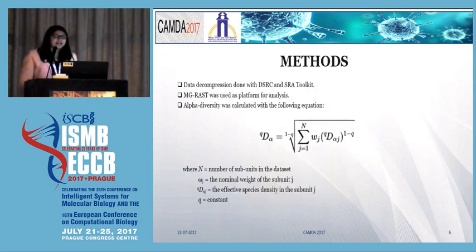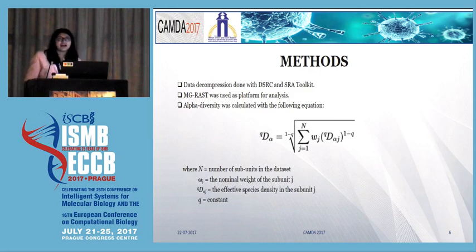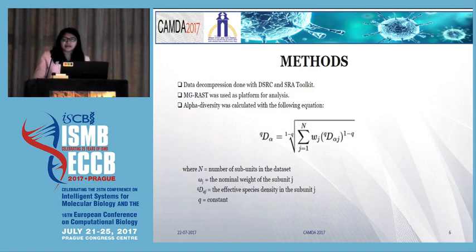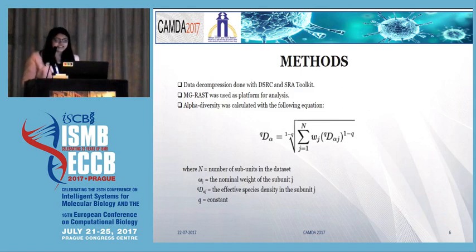Alpha diversity is the diversity of each local species pool. The following equation given here in the slide is used for calculating alpha diversity. Here, N refers to the number of subunits in the dataset. WJ is the nominal weight of subunit J. QD alpha J is the effective species density in subunit J, with Q being a constant.